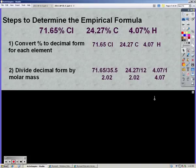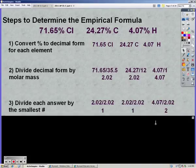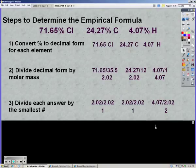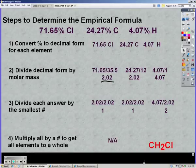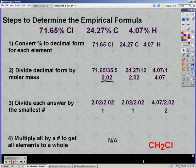We're finding the decimal form by the molar mass, because basically we're just finding the moles of each compound. Then we divide each answer by the smallest number, which in this case was 2.02. What you do to one, you have to do to all of them, so we divide all of them by 2.02, which gives us 1, 1, and 2. You multiply, if necessary, to get all of them to a whole number. In this case it was not. So we have 1 chlorine, 1 carbon, and 2 hydrogens.